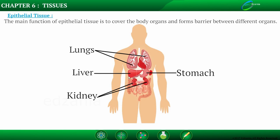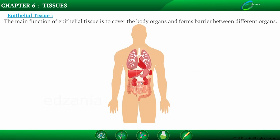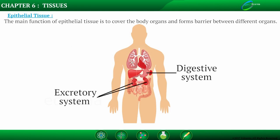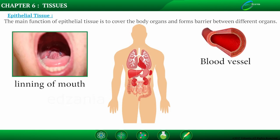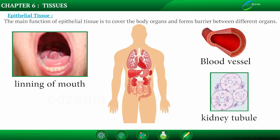Epithelial tissue also separates body systems such as the excretory system and digestive system. Its main function is to cover and protect body organs and form a barrier to keep different body systems separate. Examples include the lining of the mouth, blood vessels, and kidney tubules, which are all made up of epithelial tissues.